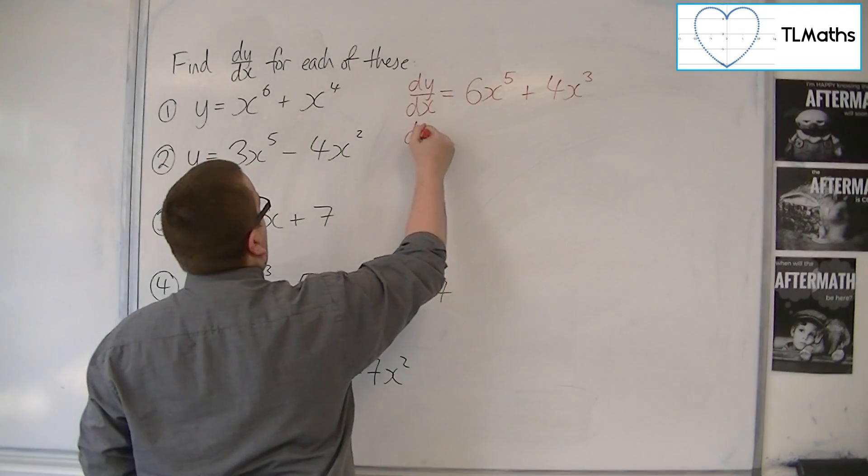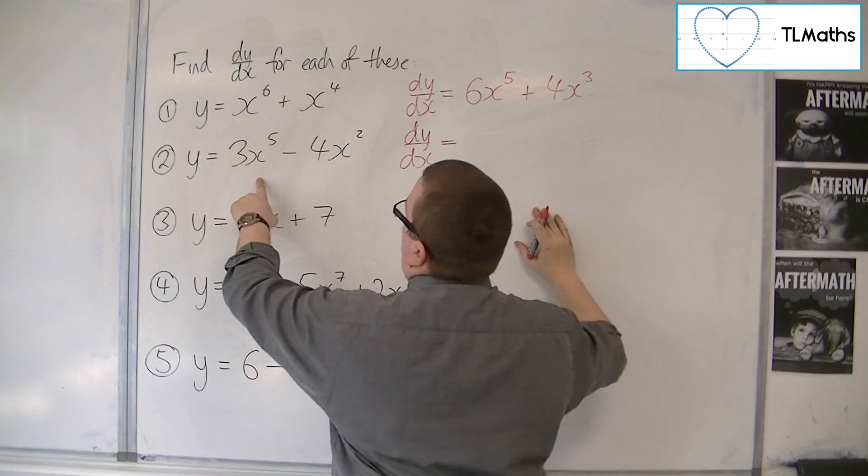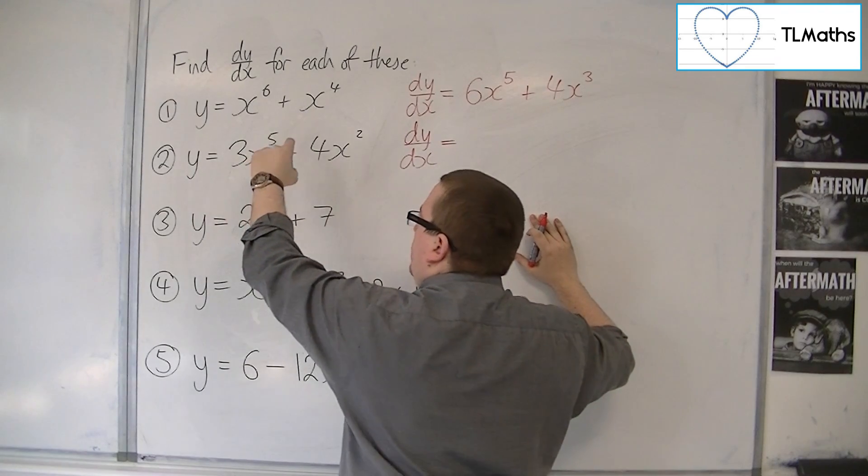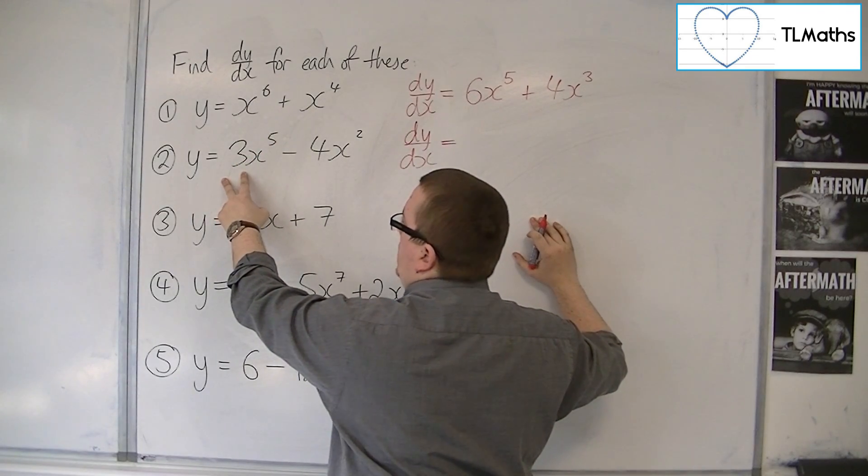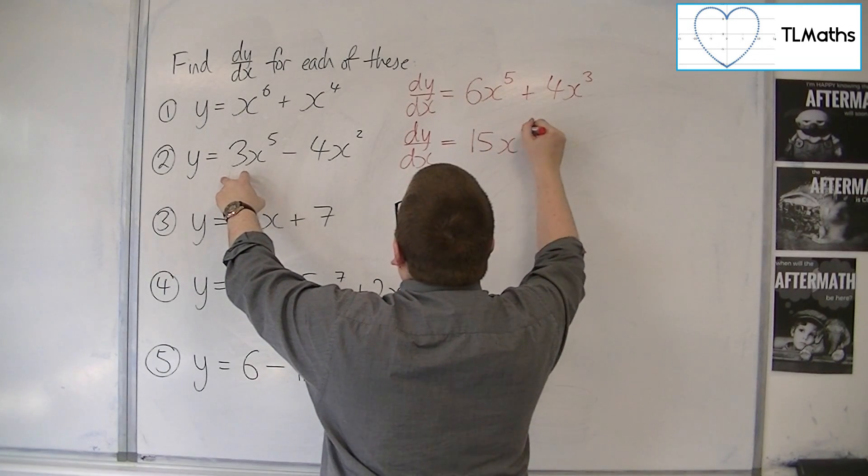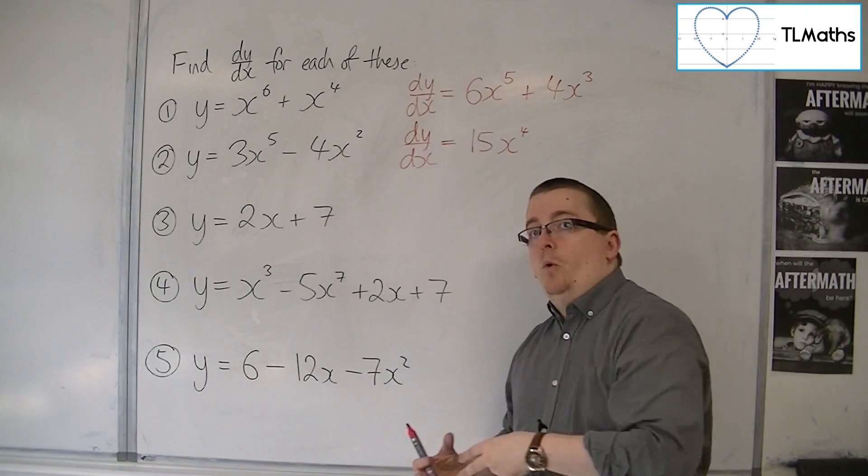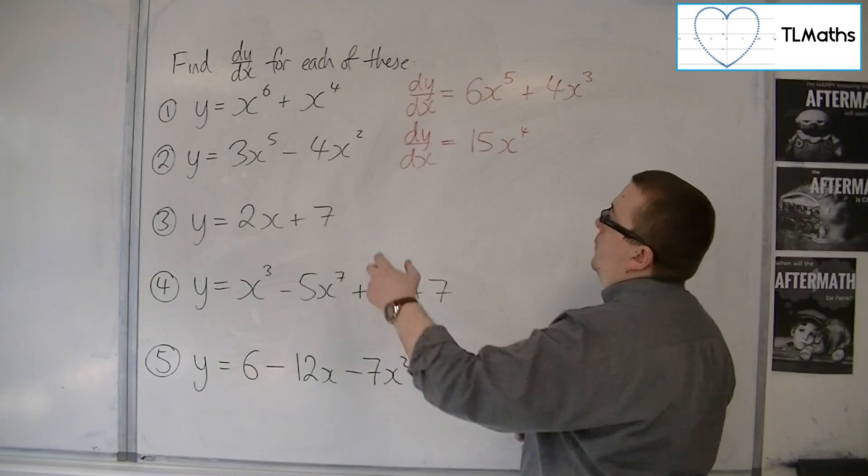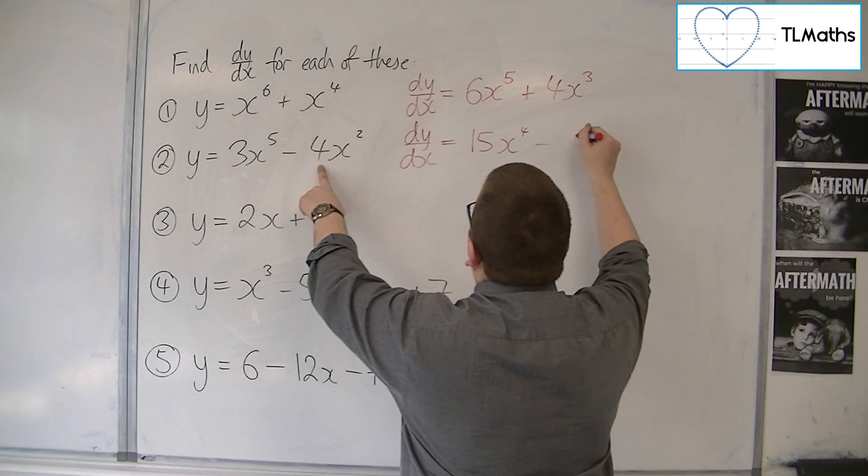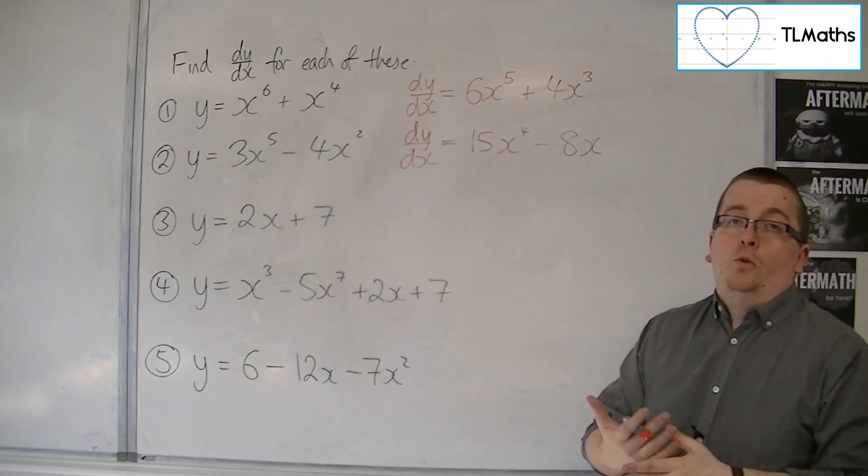For the second, we have 3x^5. The 5 comes down to the front and what happens is the 5 multiplies with the 3, so we're going to have 15x and then take 1 off the power. So when the power comes down to the front, it multiplies with whatever is there. So here, the 2 comes down to the front, multiplies with the -4 so we get -8, and then we take 1 off the power. So -8x to the 1.